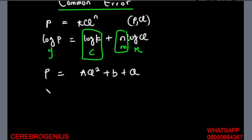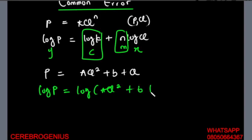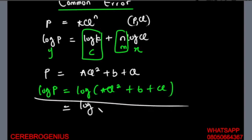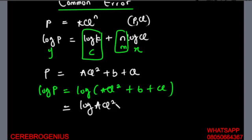The mistake people will make is they will still use logarithm and say: log p equals log(aq squared plus b plus q). My friend, the next step is what makes it very wrong. They will then say this equals log(aq squared) plus log b plus log q. Please, this is exceptionally wrong.